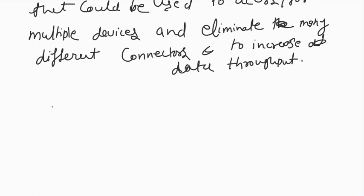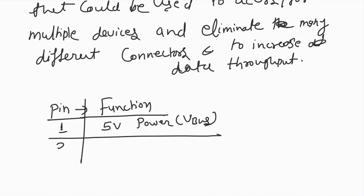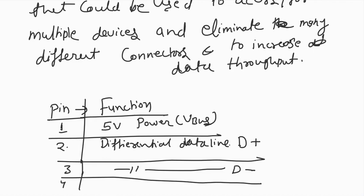Now we look at the pin diagram — pin and function. Pin number 1 and 5 hold power and V-Bus. Then there is D-plus, the differential data line, and D-minus, also a differential data line. Pin 4 is power and signal ground.